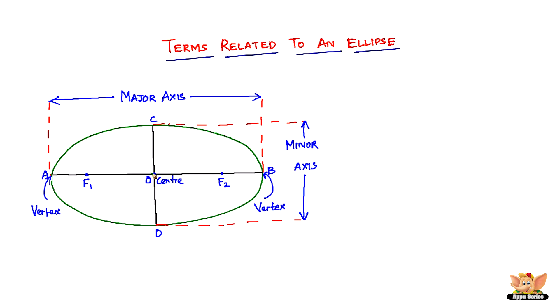The first and foremost thing is the center of an ellipse. The center of the ellipse lies at the intersection of the two axes. The midpoint of the line segment joining the foci is called the center of the ellipse. This black line joins the foci — F1 and F2. The plural form of focus is foci, and the midpoint of this line joining the foci is called the center of the ellipse.